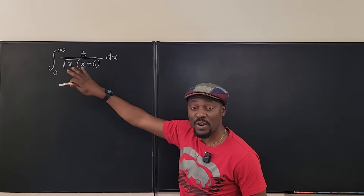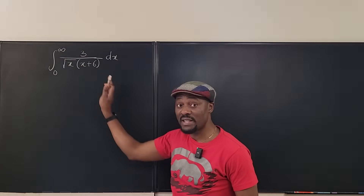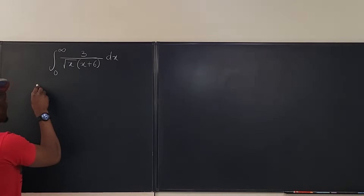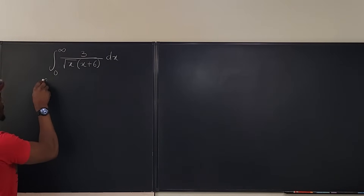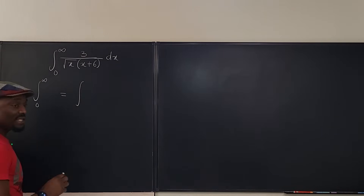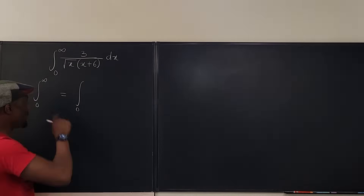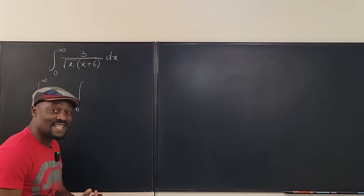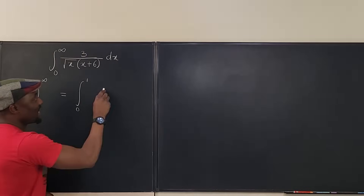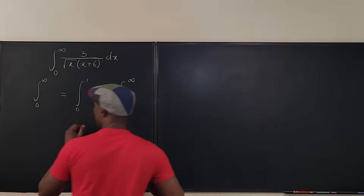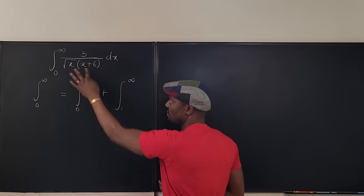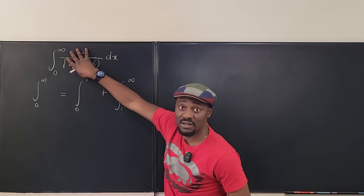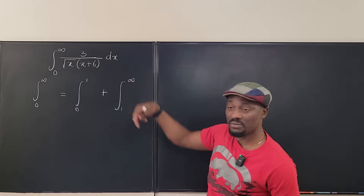So what should you do when you have a situation like this? You have to rewrite the integral. Because you have both combined, we have to say that if you have an integral that goes from zero to infinity, you might as well split it at any number between zero and infinity. To be safe, always use one because one is an easy number to deal with. So I'm going to split this into an integral from zero to one, and then one to infinity.